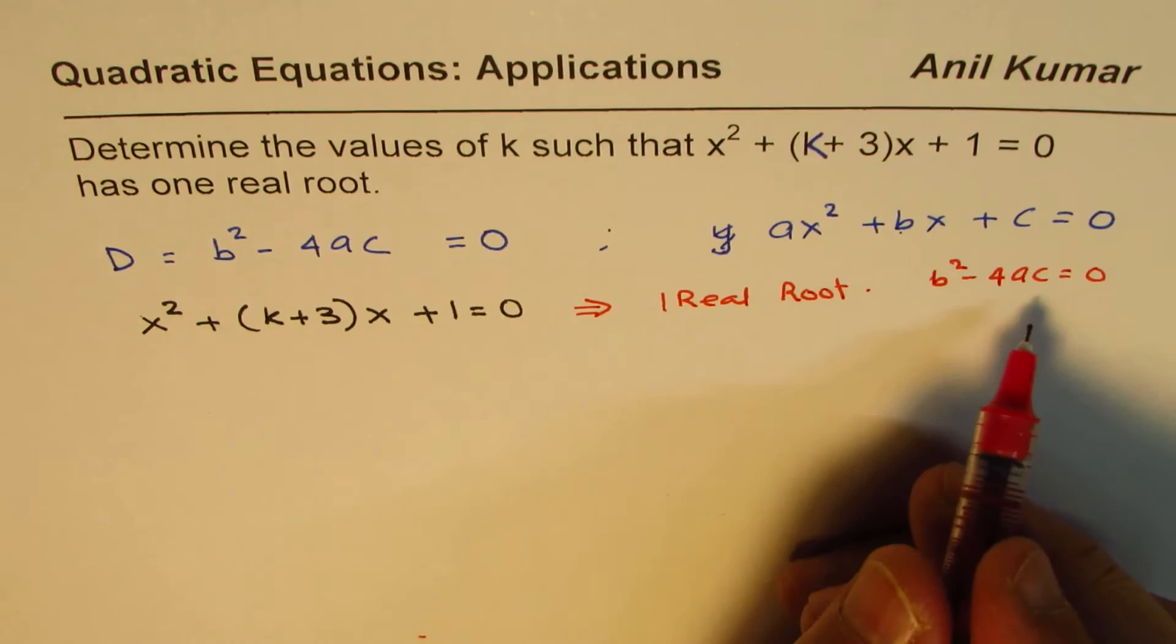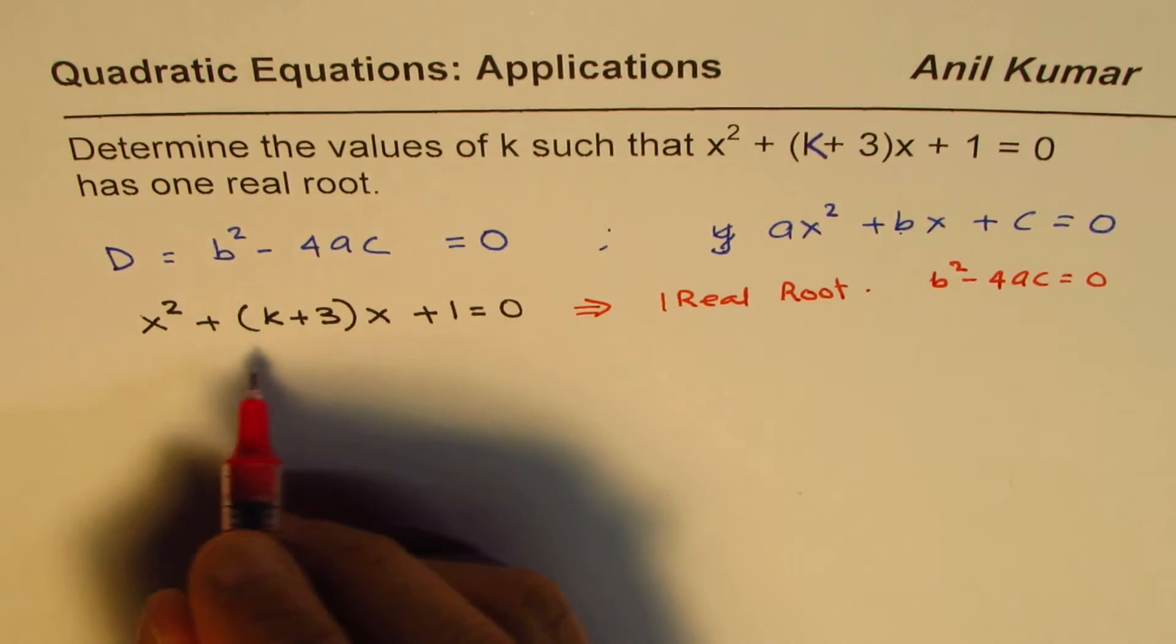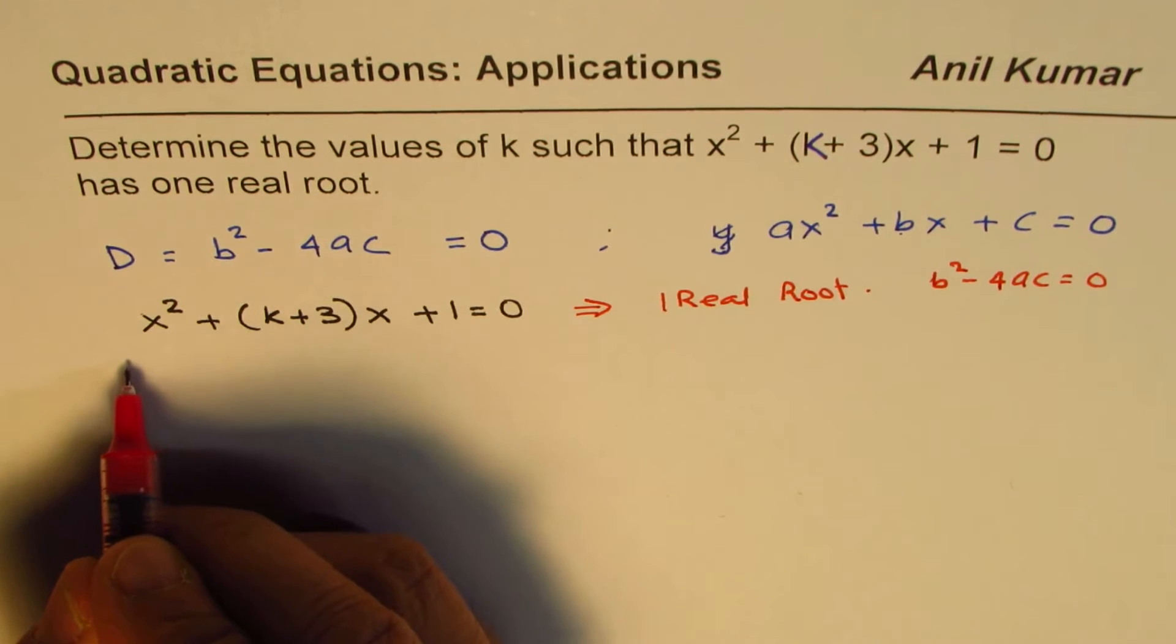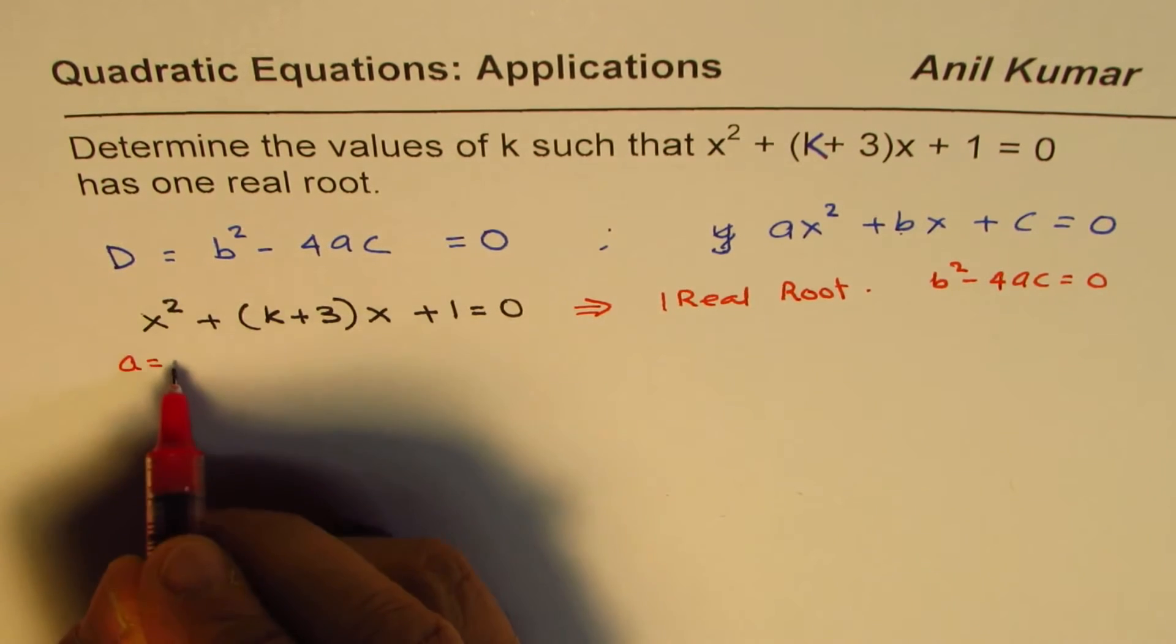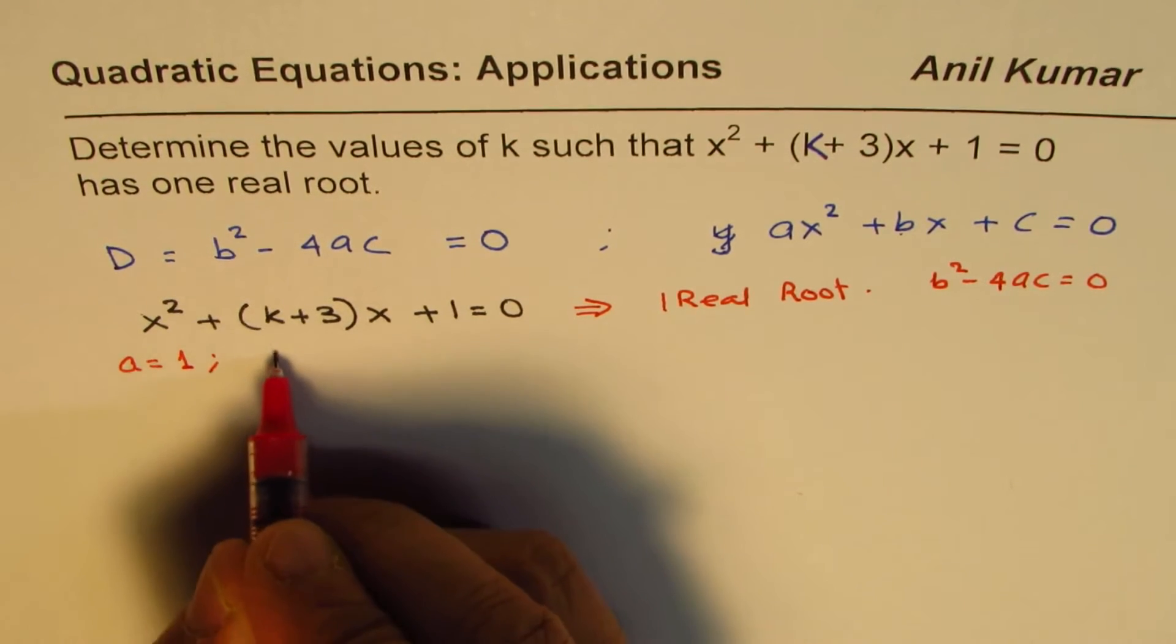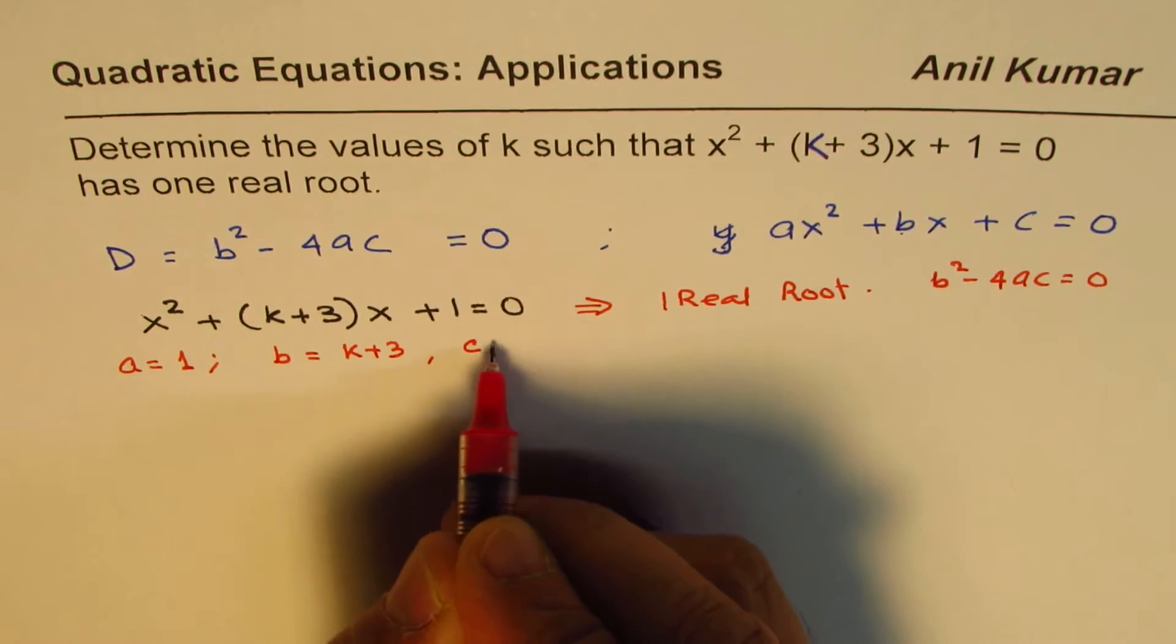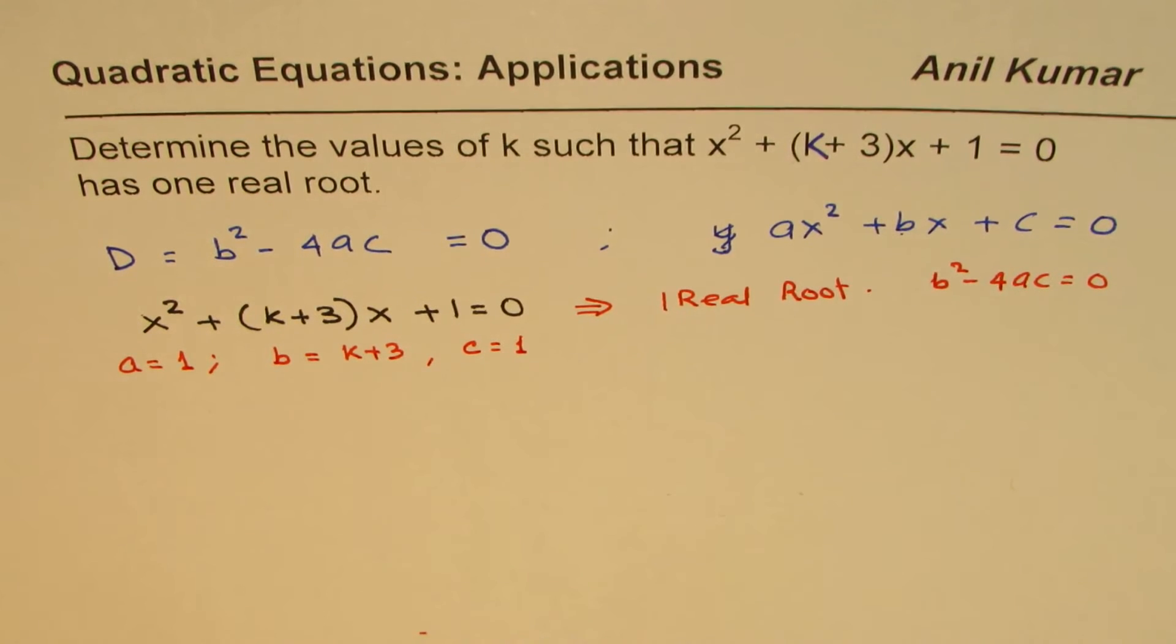Now in the given equation, what is a, what is b, and what is c? If we compare, a is the coefficient of x² which is 1, b is k+3, and c equals 1. So now we will just calculate the value of k from this condition.